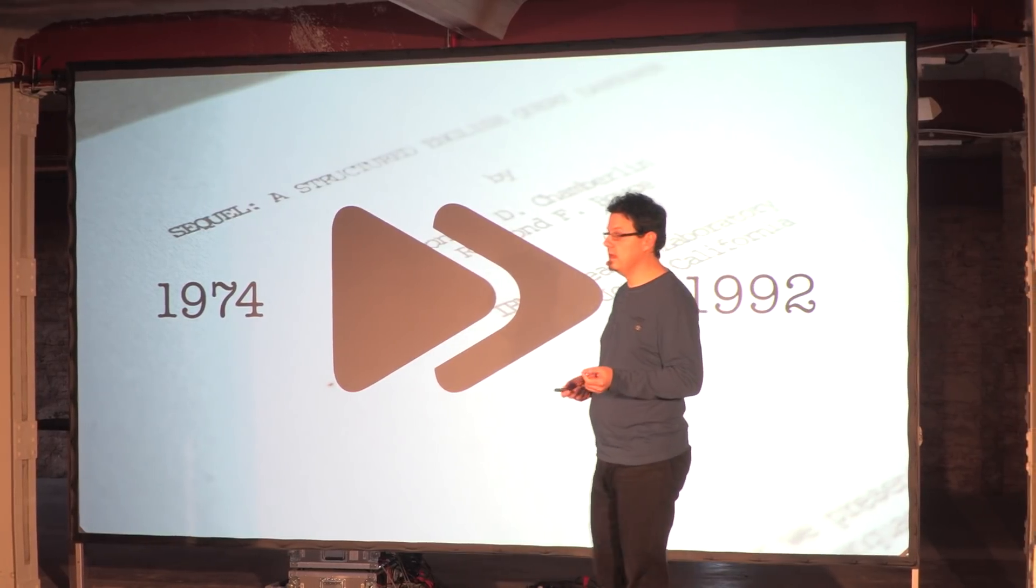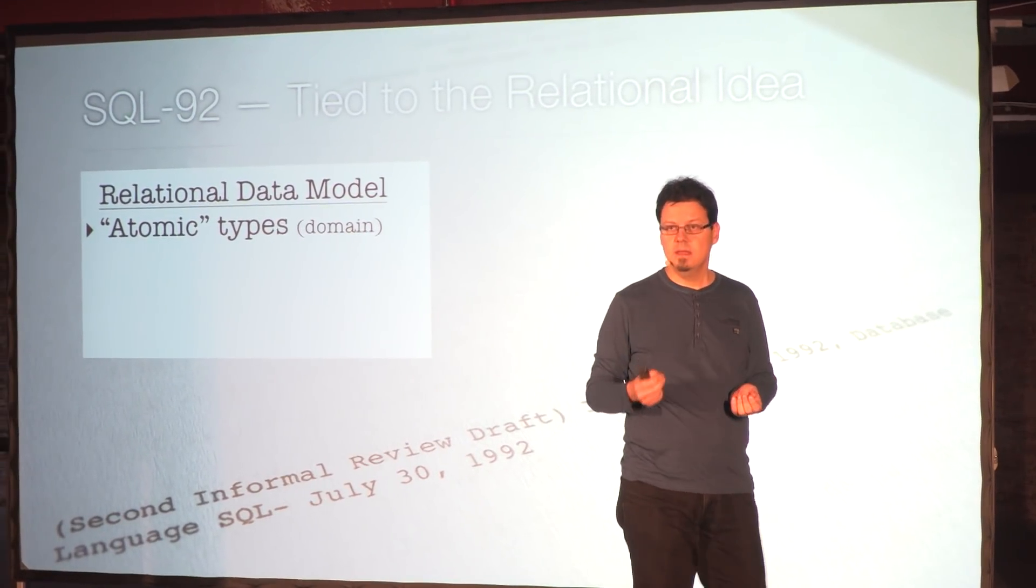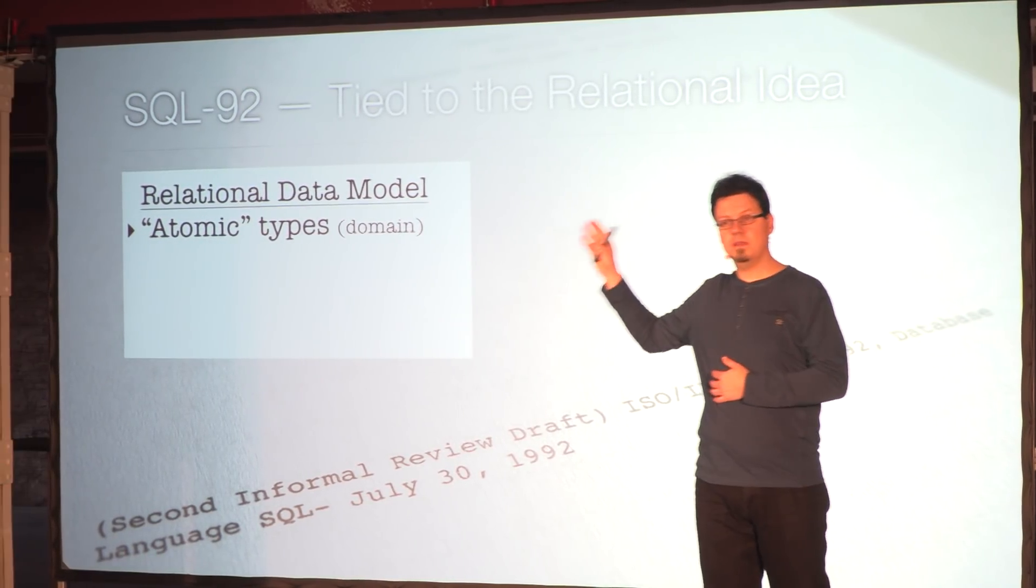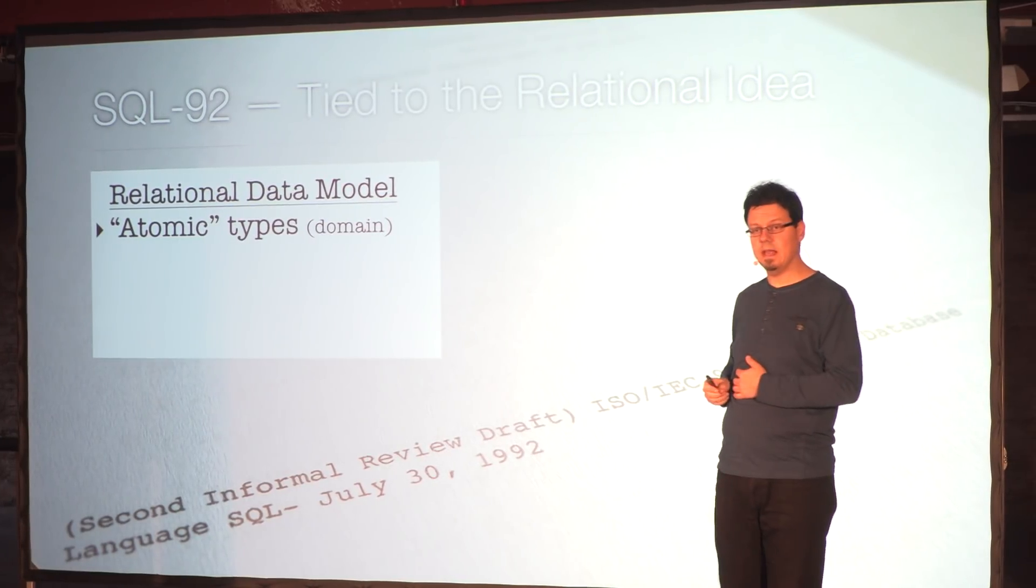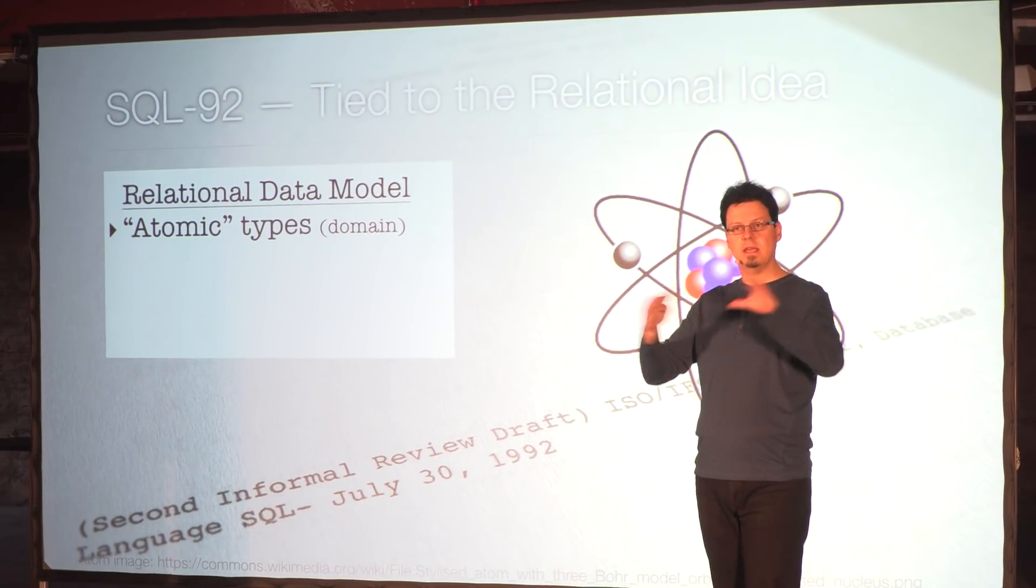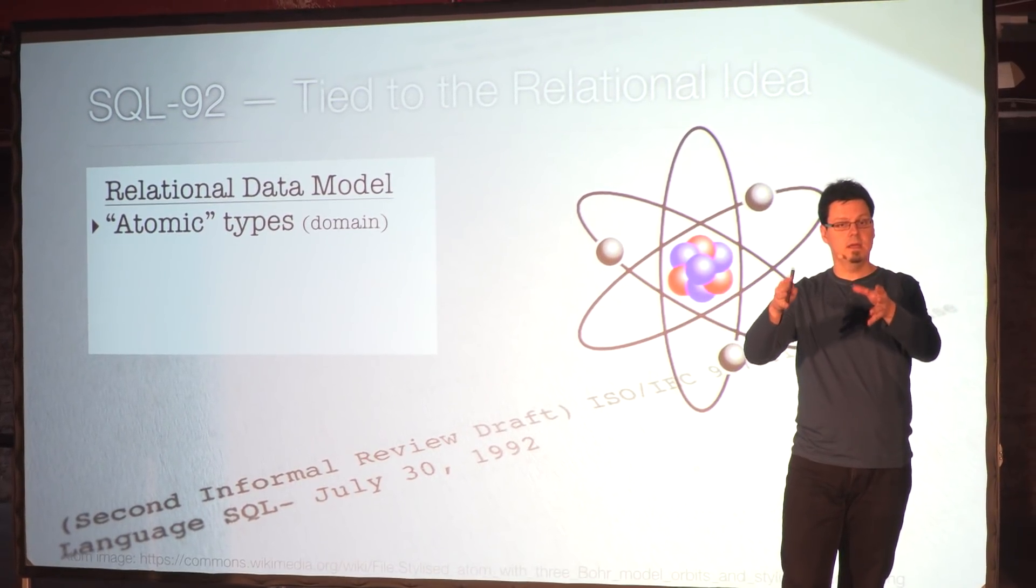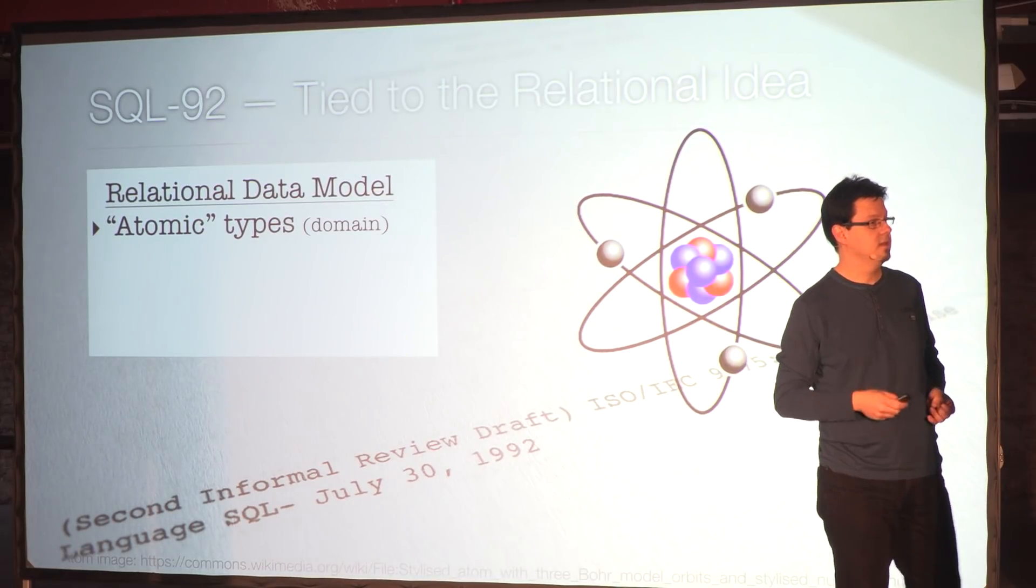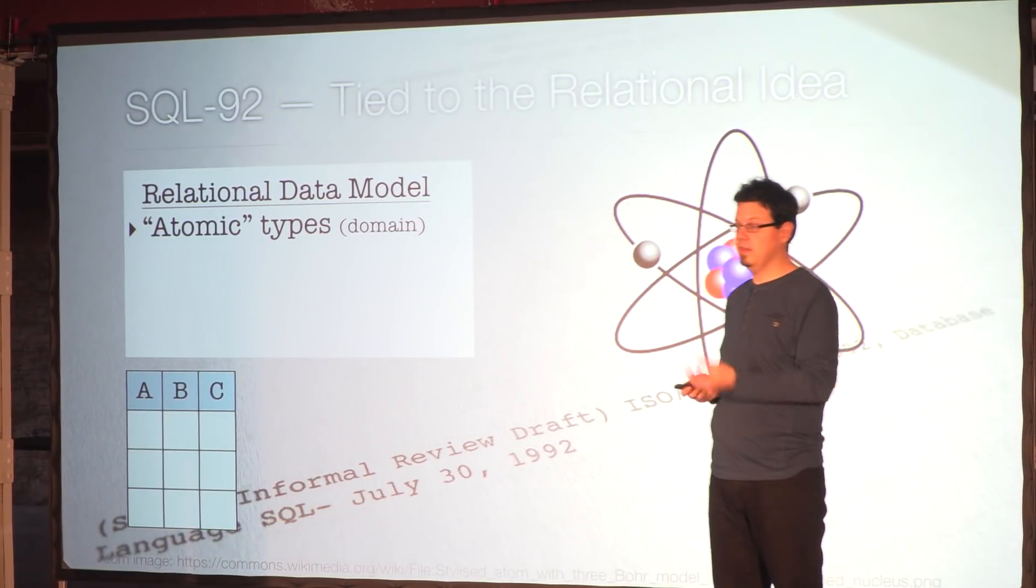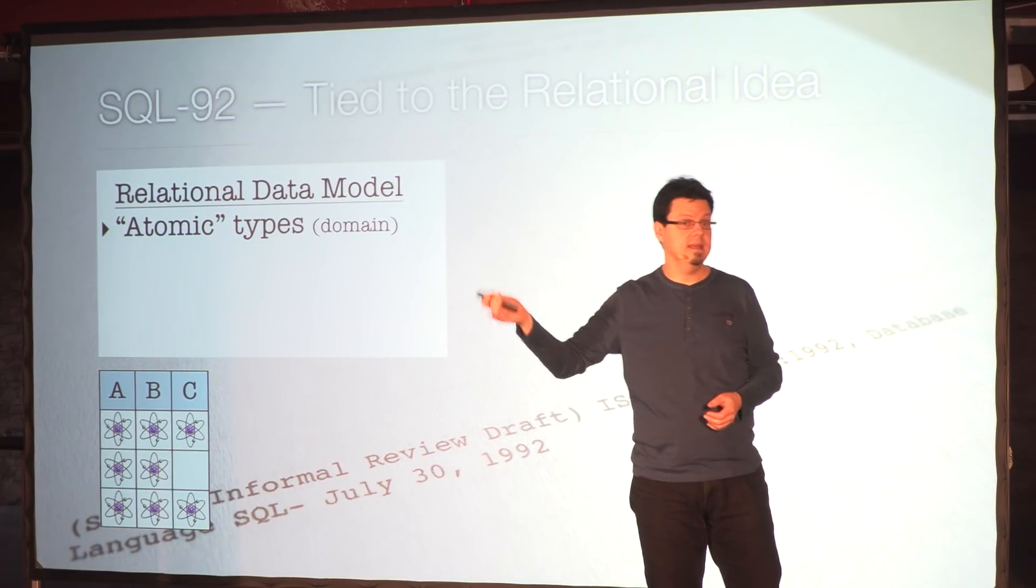One important idea at the beginning of SQL was that it was tied to the relational idea, which consists of two important sub-ideas. The first one is the relational data model. The original idea in the relational data model said we have in each cell, in each table, at the intersection between a column and a row in one cell, what can you put in there? The original definition of the relational model said an atomic type, one value of an atomic type. So if you have a table like this, you can put values in there like strings, numbers, dates, things like that.